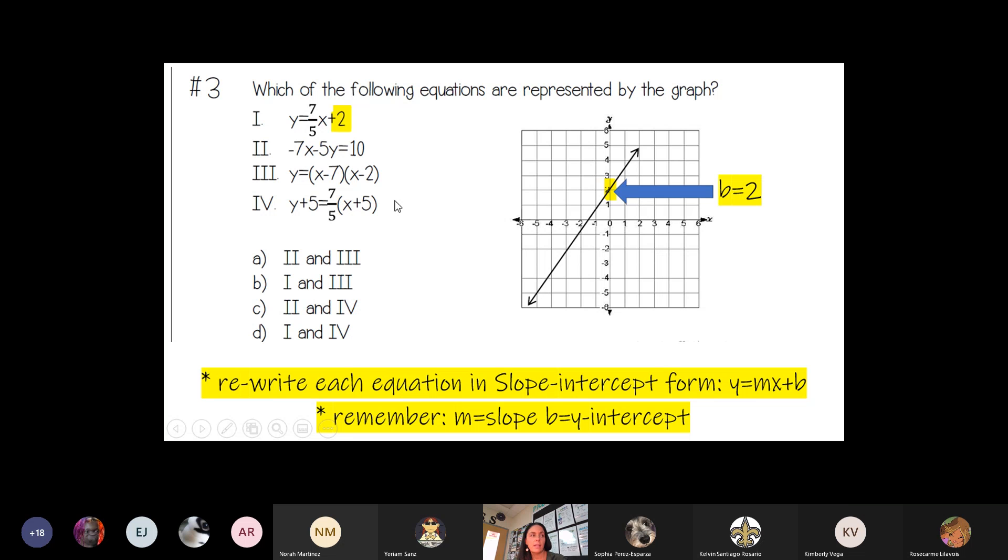Then I go ahead and find out my slope. So I'm going to go my rise, which is positive 7, over my run, which is positive 5. When I do 7 over 5, that's my slope, because it's always rise over run. So 7 fifths, which is the same thing I have in equation 1.